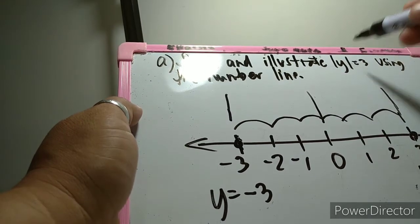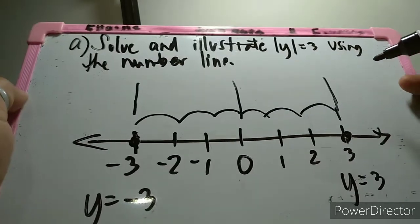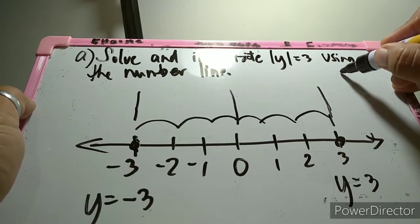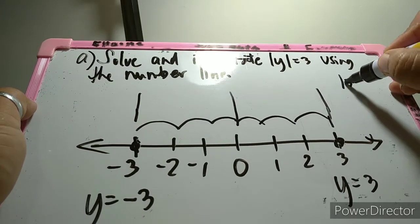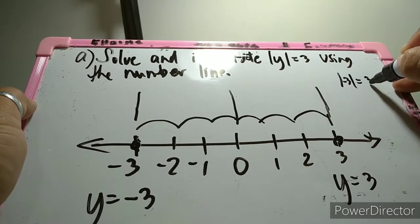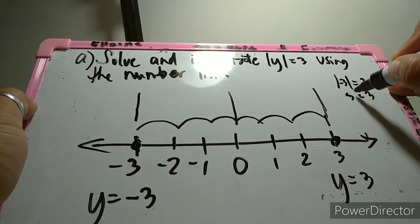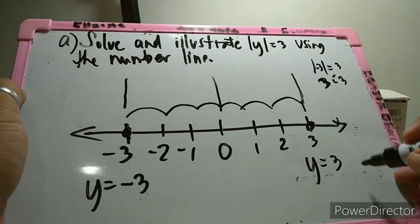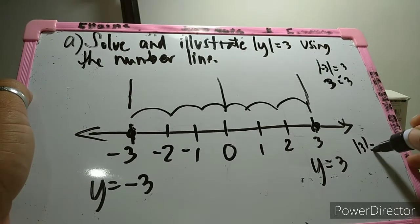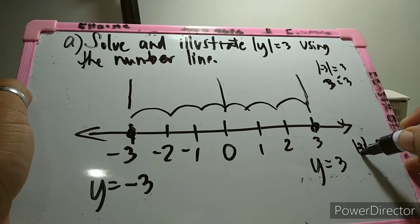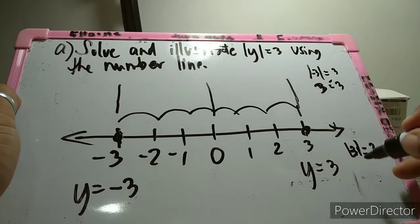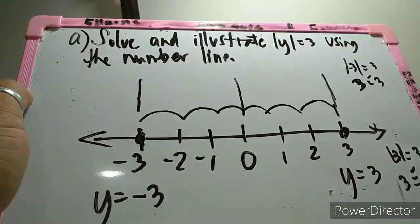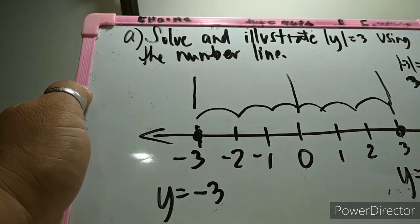Let us verify: the absolute value of y equals 3. For y equals negative 3: the absolute value of negative 3 equals 3, and 3 equals 3 — check. For y equals positive 3: the absolute value of positive 3 equals 3, and 3 equals 3 — check.